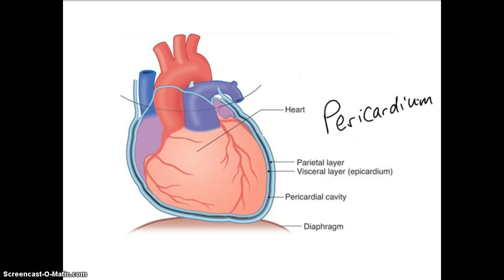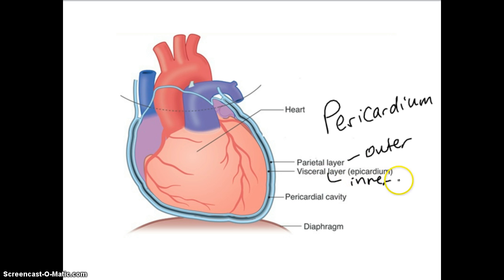The outer layer of the pericardium is called the parietal layer. The inner layer of that sac is called the visceral layer. Importantly, the inner layer of the pericardium — the visceral layer — is also the epicardium. Those are the same thing.